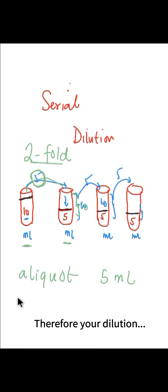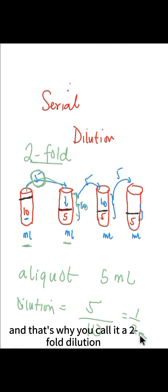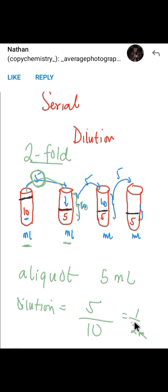Therefore, your dilution is 5 (which is the aliquot) divided by 10, which equals 1 over 2. And that's why you call it a twofold dilution. Alright, so that's it.